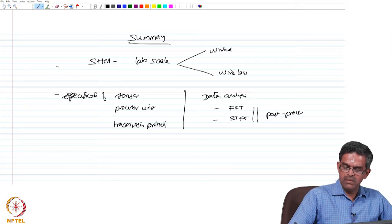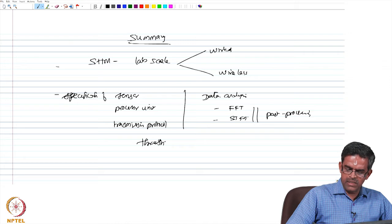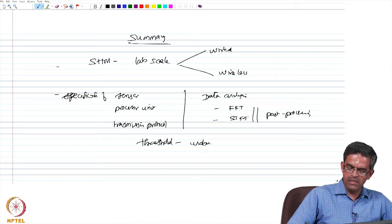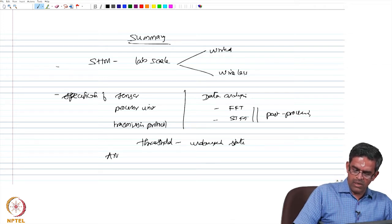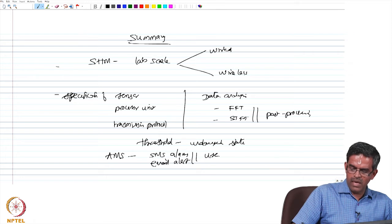Once it is done and the value is compared with the threshold number which is preset in the system in an undamaged state, then the alert monitoring system raises an SMS alarm and an email alert to the user.